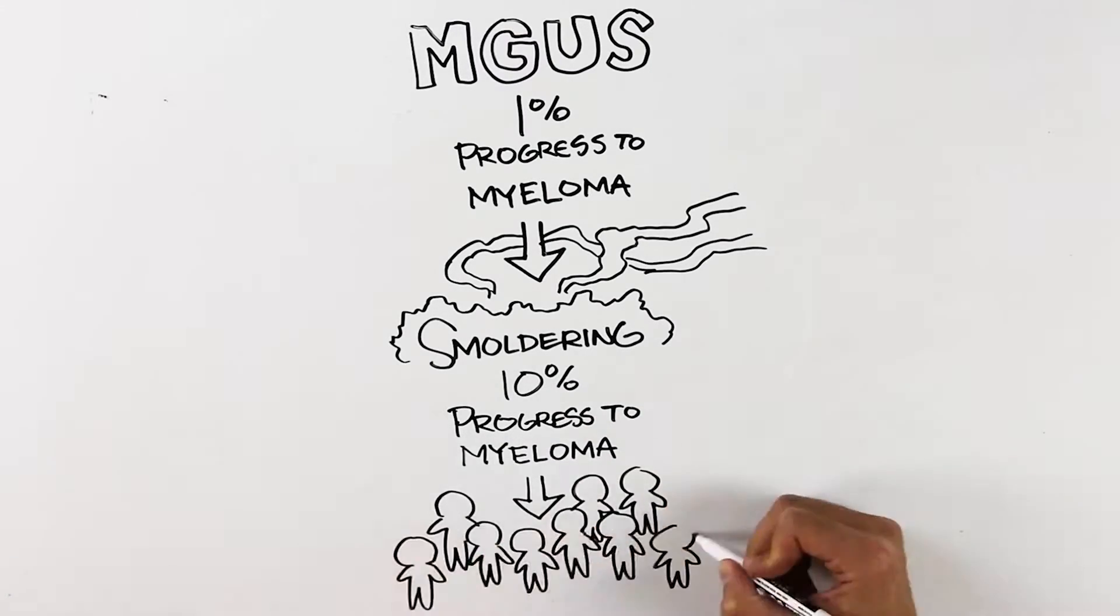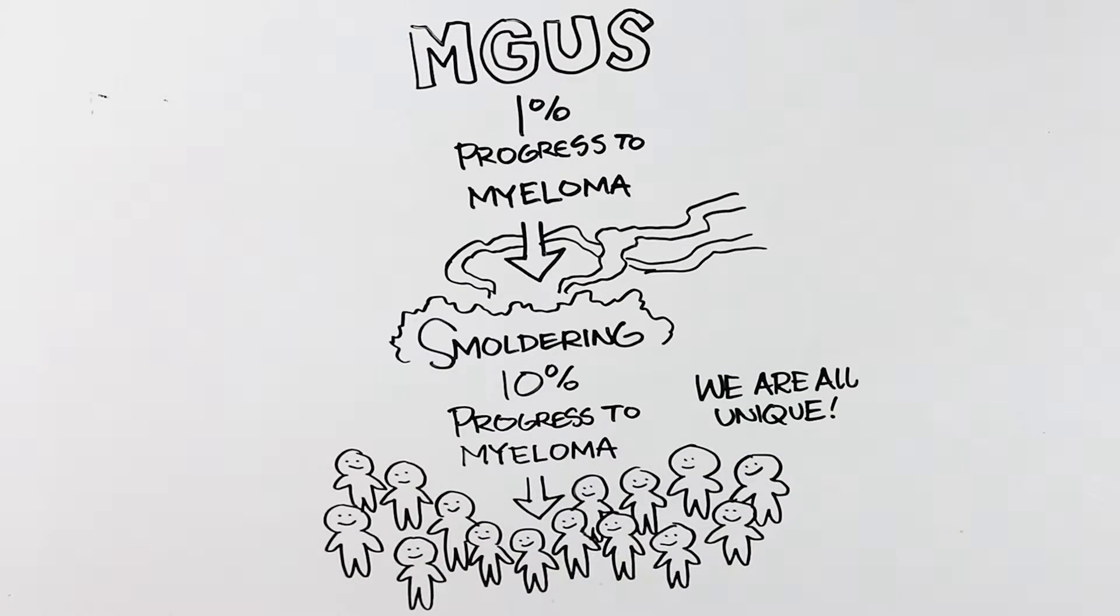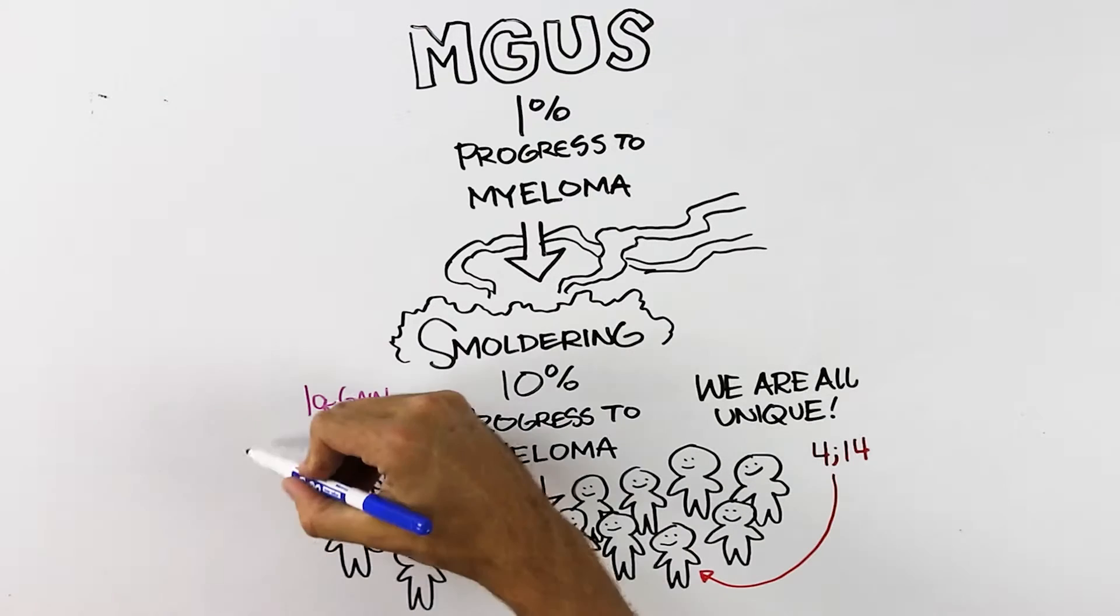Multiple myeloma is not a single disease. There are different genetic types of myeloma. Some are normal risk, and some are high risk where chromosomes get swapped or deleted. So no myeloma patient is exactly the same.